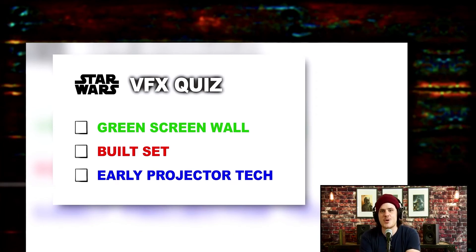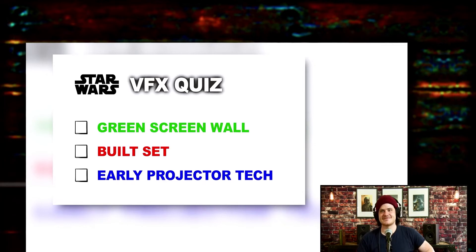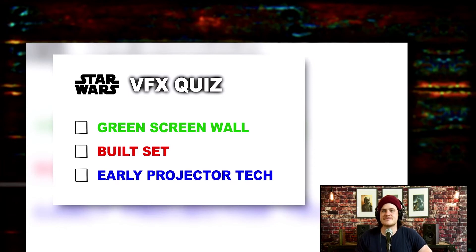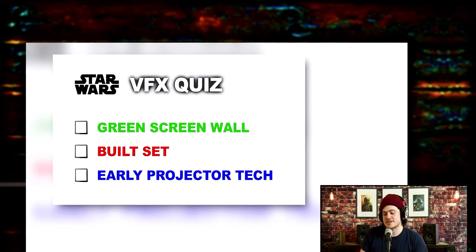I've seen pictures of this before. I think this is a built set and the background is a matte painting. Luke's little platform is over a couple of mats. So I'm going to go with built set — although I originally thought it was a mix between set and blue screen. Not green screen but blue. I'm going to go with built set.